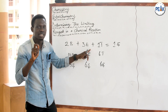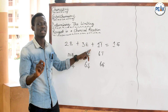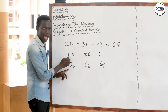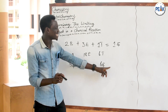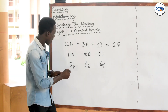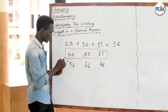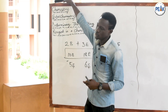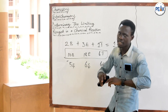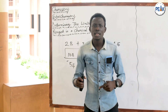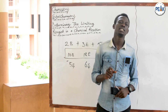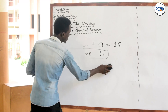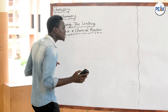It is the limiting reagent that determines the amount of product to be formed. Because my loaves of bread were used up completely, I can get no more sandwiches. That is how we introduce the concept of limiting reagents. Now, how do we calculate for limiting reagents in a chemical reaction? I'm going to use a question to explain this.